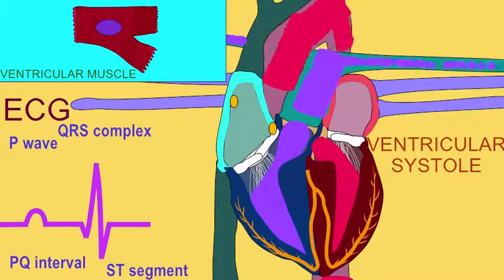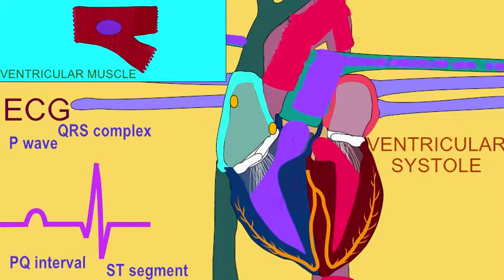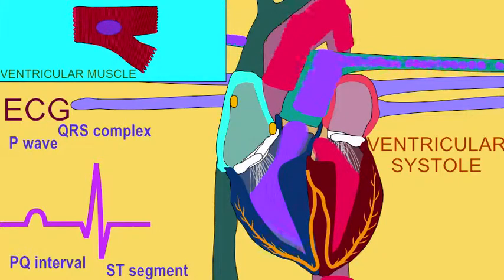This is known as the end diastolic volume — when the ventricles were done with their diastole, they were as filled with blood as they would get this cardiac cycle. As the ventricles empty, they will end at their end systolic volume, which is as empty as the ventricles will become once they have ejected all their blood. So this ventricular ejection will remove a stroke volume, perhaps 70 milliliters of blood, taking the ventricles from their fullest point — their end diastolic volume — to their empty point — their end systolic volume.